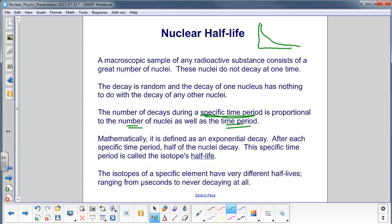After each specific time period, half of the nuclei decay. And it only seems to make sense to call that a half-life. So the specific time period where half of the radioactive nuclei decay into something else is called that isotope's half-life.